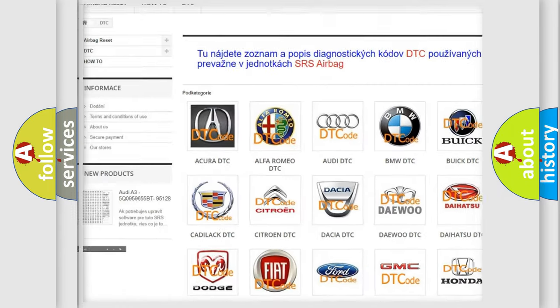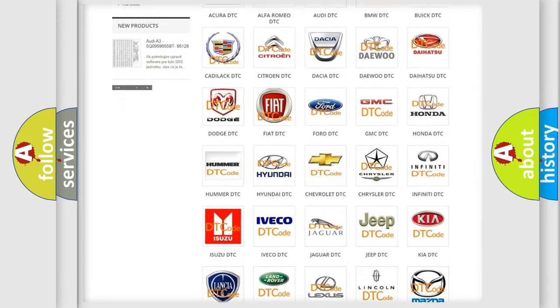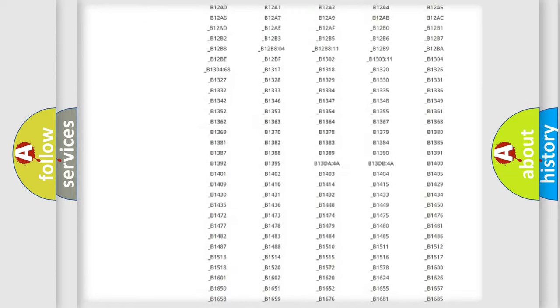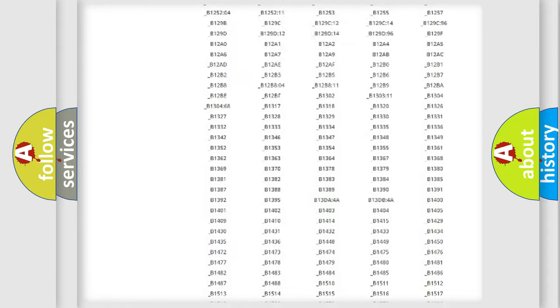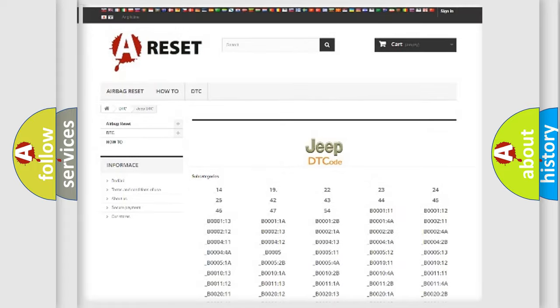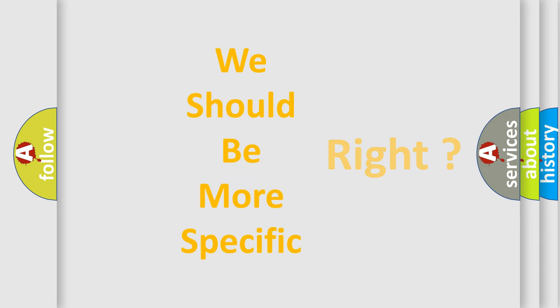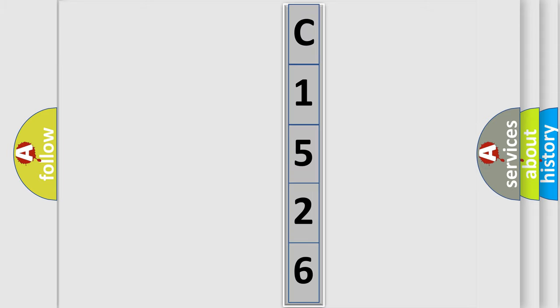Our website airbagreset.sk produces useful videos for you. You do not have to go through the OBD2 protocol anymore to know how to troubleshoot any car breakdown. You will find all the diagnostic codes that can be diagnosed in Jeep vehicles, and many other useful things.